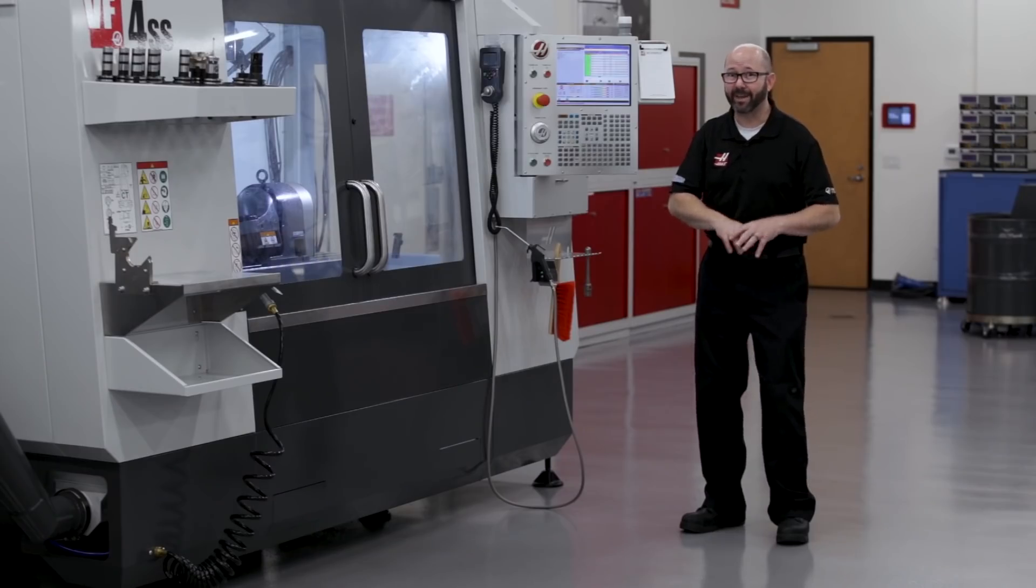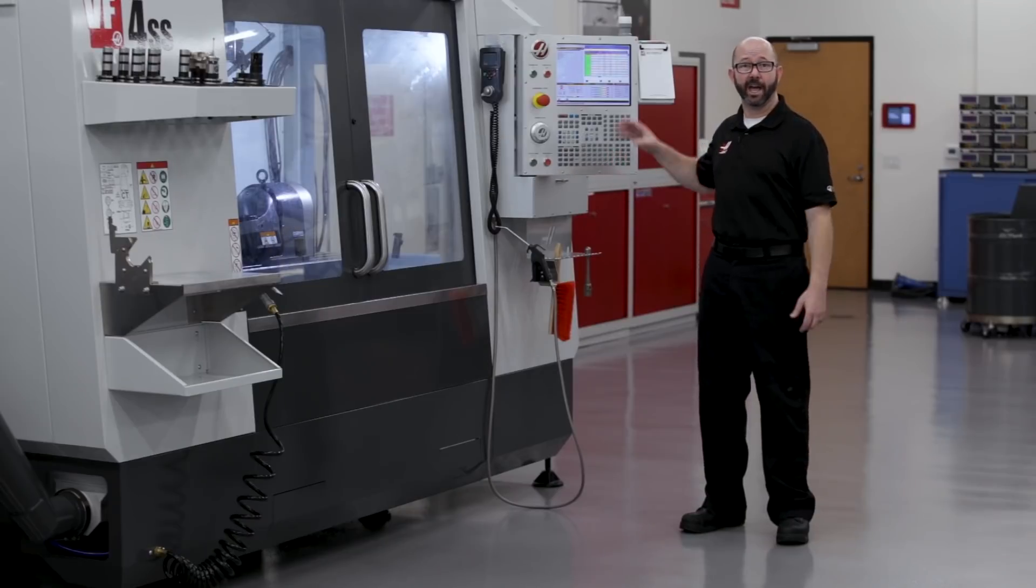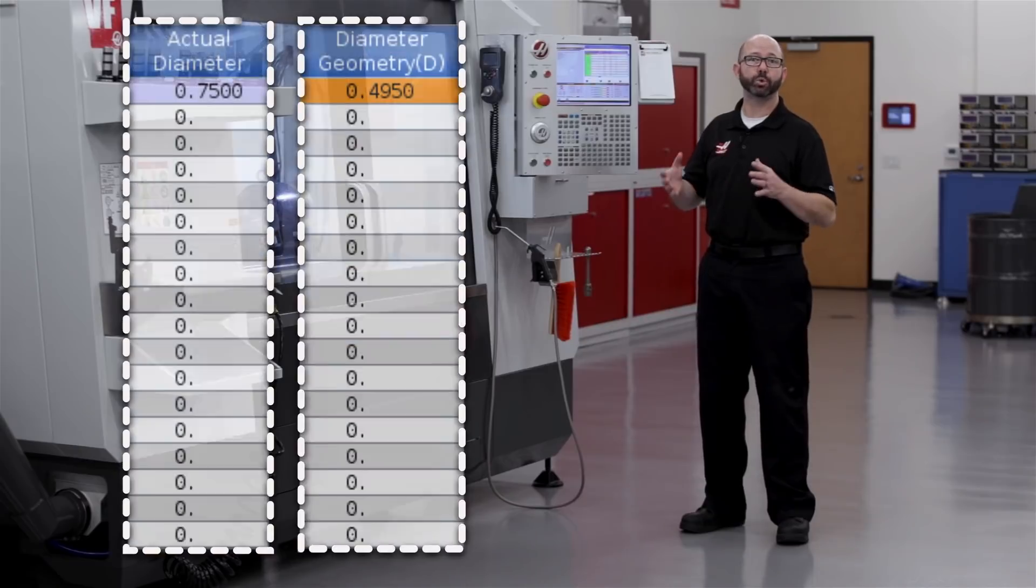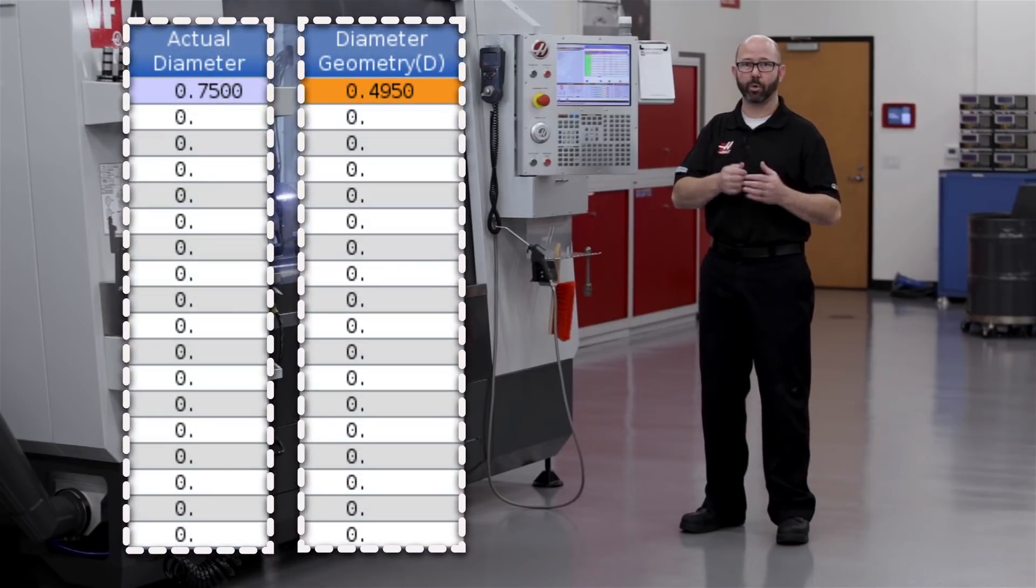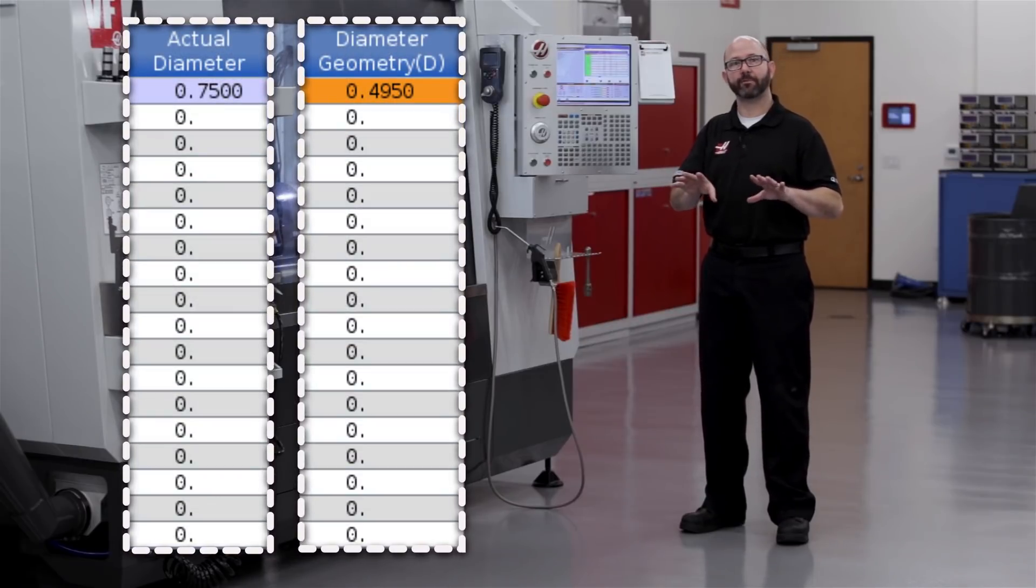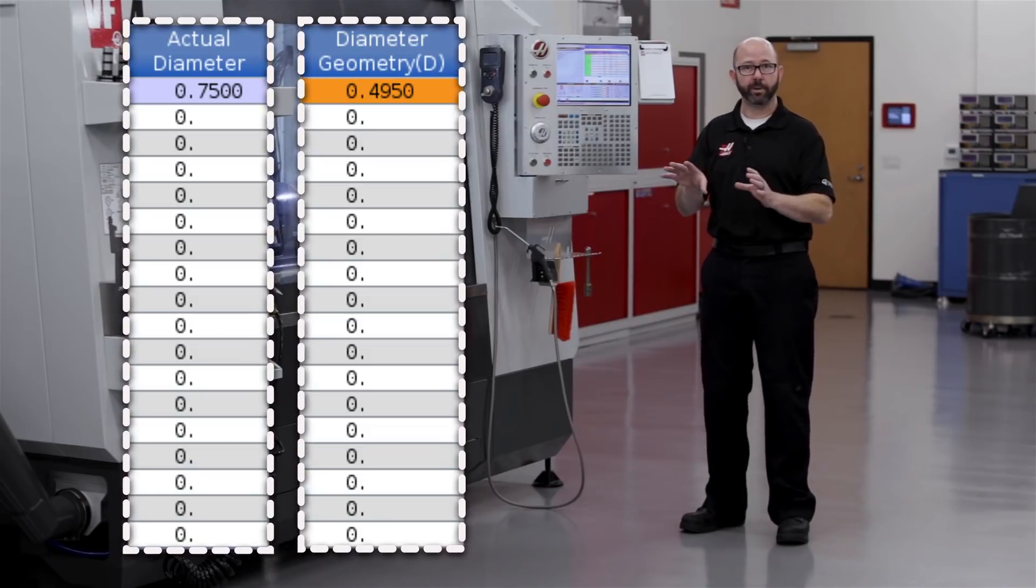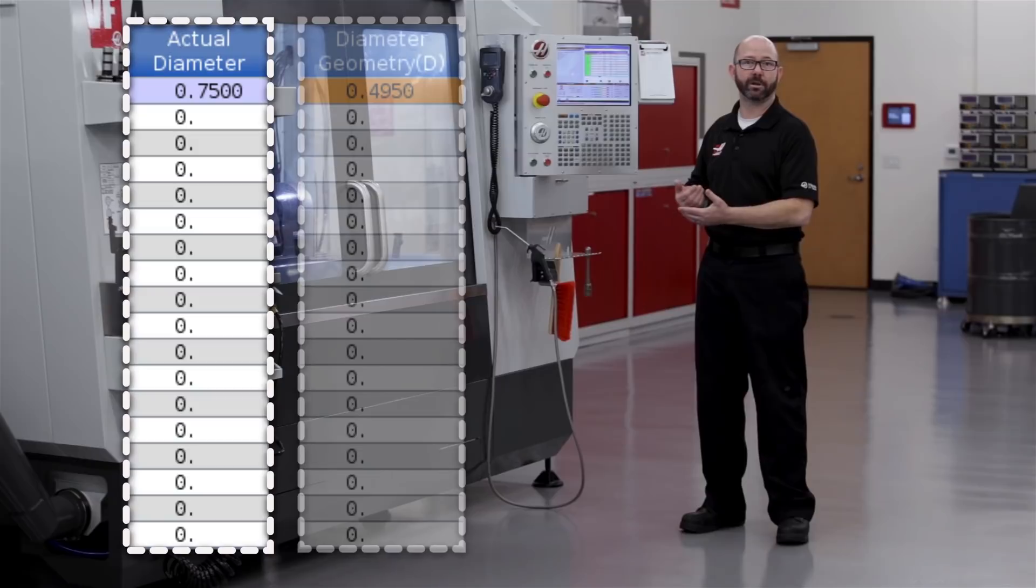Now if we don't have any information at all in our actual diameter column, the control is going to try and do the math based on our tool geometry column, diameter or radius. And if you've got information in both of those columns, the control is going to use the info in our actual diameter column to do the math.